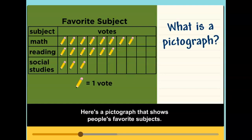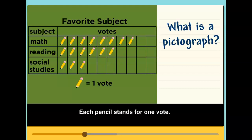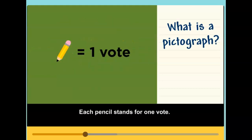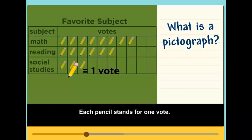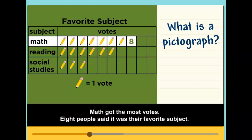Here's a pictograph that shows people's favorite subjects. What subject do people like best? Each pencil stands for one vote. Math got the most votes. Eight people said it was their favorite subject.